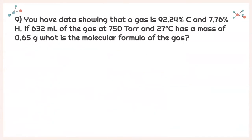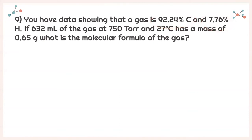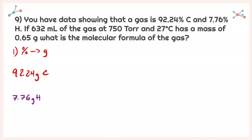For the annotations problem: a gas is 92.24% carbon and 7.76% hydrogen. 632 milliliters of the gas at 750 Torr and 27 degrees Celsius has a mass of 0.65 grams. What is the molecular formula? First, convert percents to grams by assuming 100 grams total: 92.24% carbon becomes 92.24 grams of carbon, and 7.76% hydrogen becomes 7.76 grams of hydrogen.